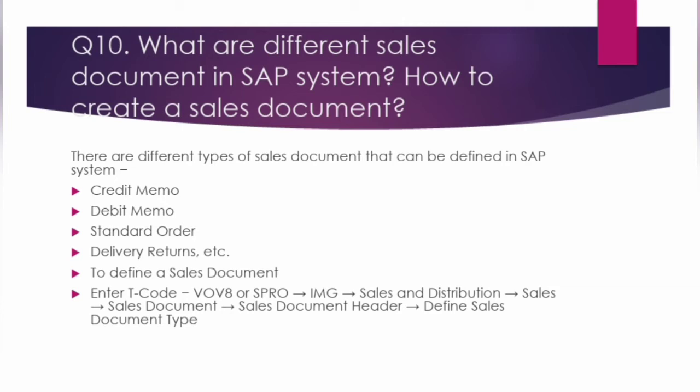The next question is: what are the different sales documents in SAP system and how do you create them? There are different types of sales documents that can be defined in SAP, including credit memo, debit memo, standard order, delivery, returns, etc. To define a sales document, enter T-code VOV8 or SPRO, then navigate to IMG → Sales and Distribution → Sales → Sales Document → Sales Document Header.